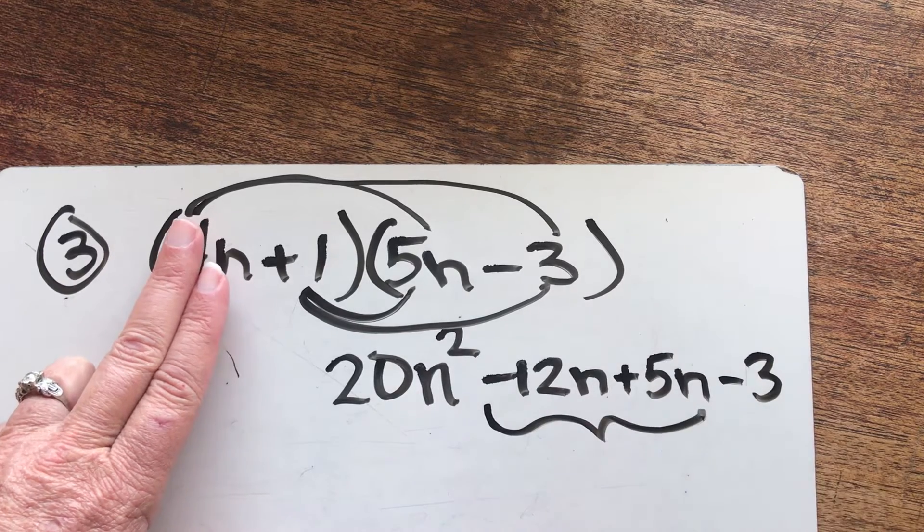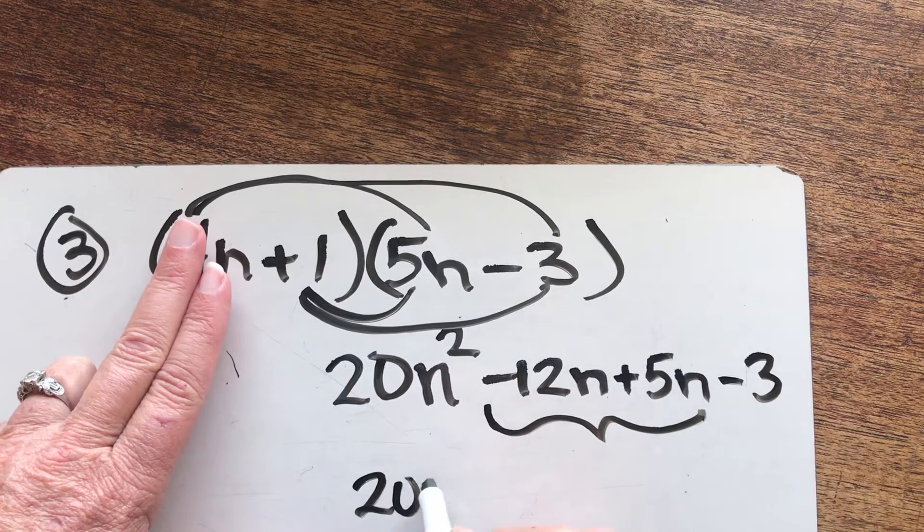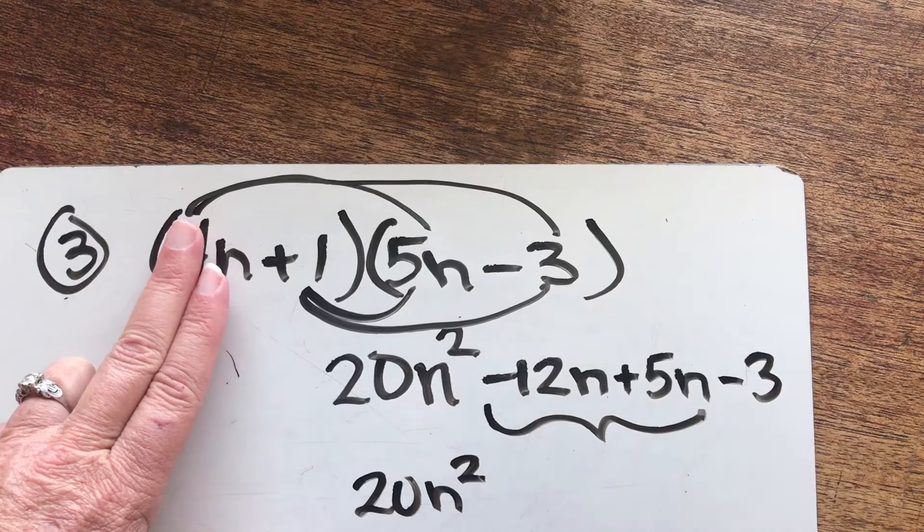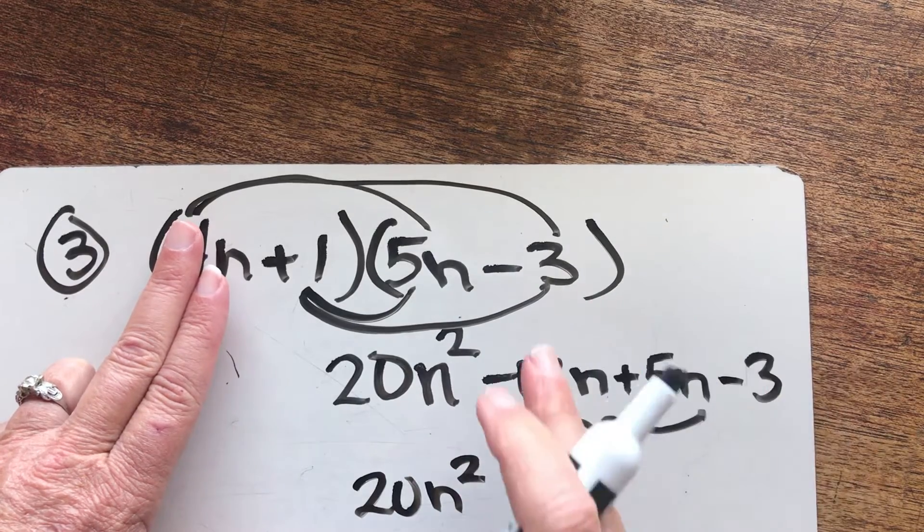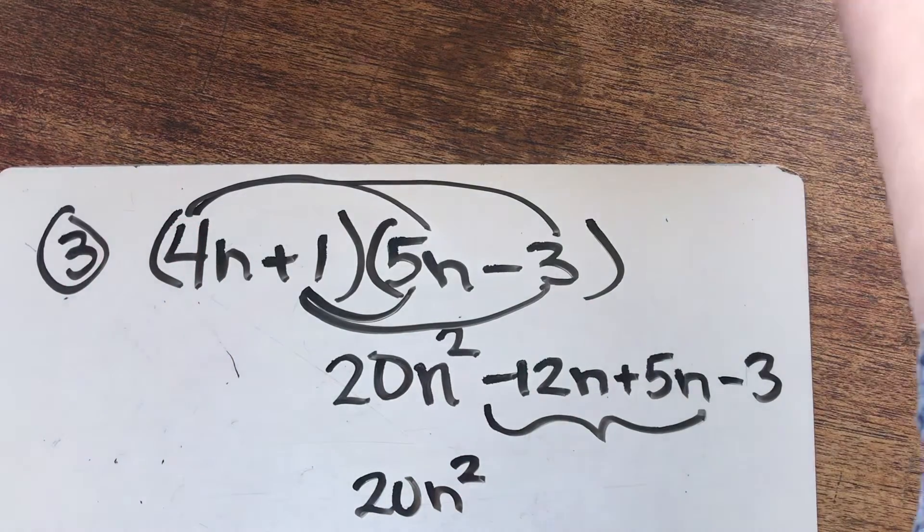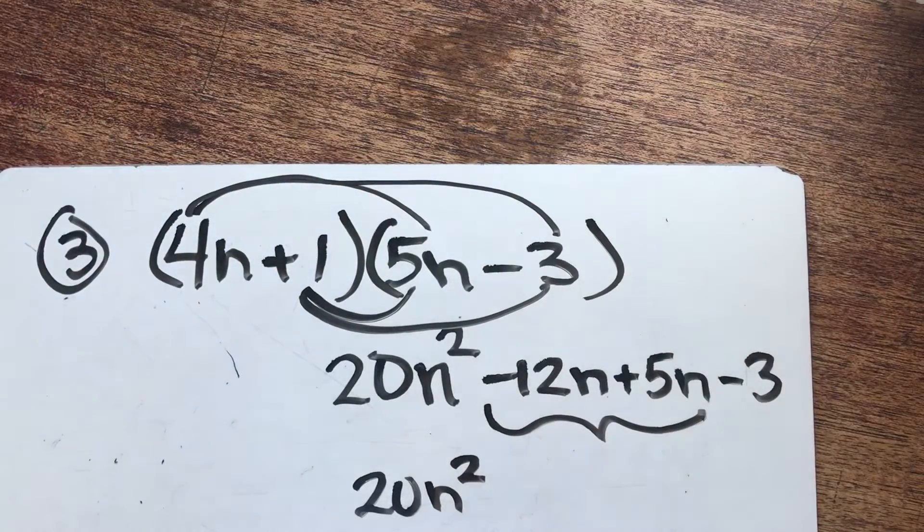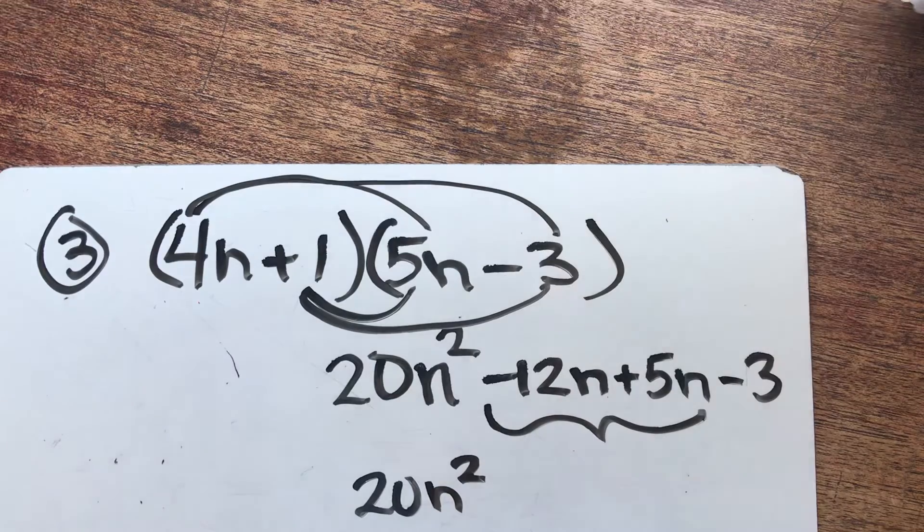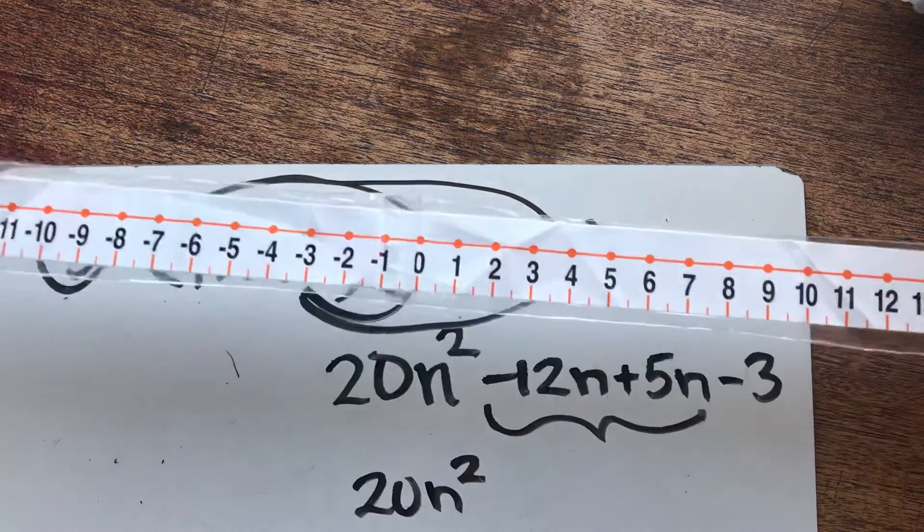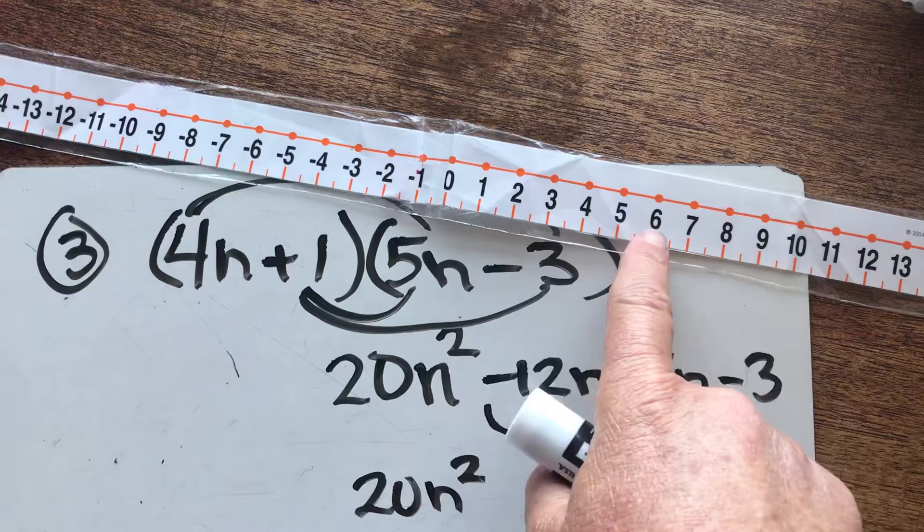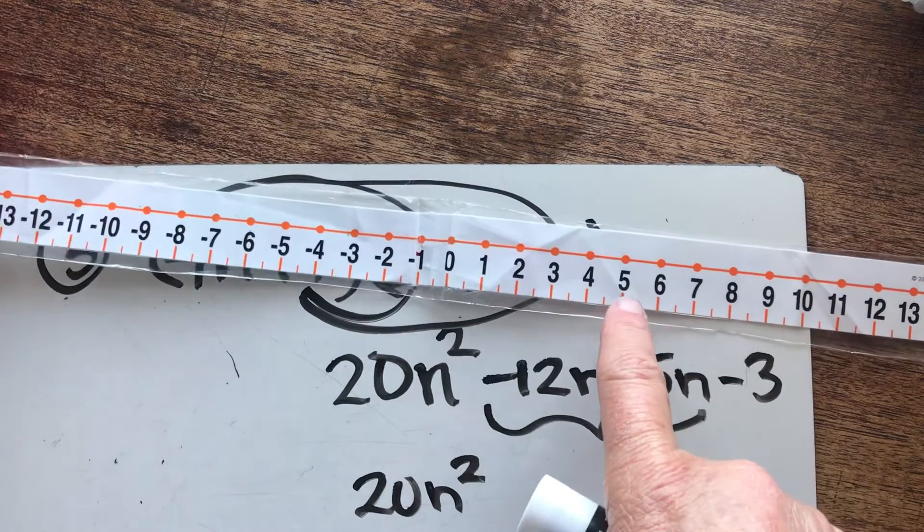We have some like terms right here on the diagonal. So 20 N squared is first. You might want to use your number line on this. Let's see if I can get my number line out. Again, you can print your own number line. So here we go.